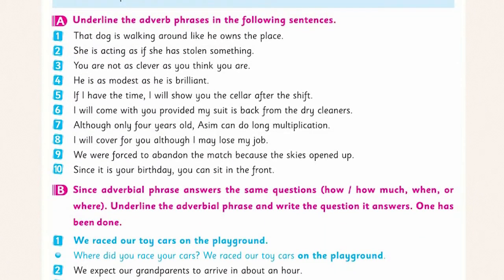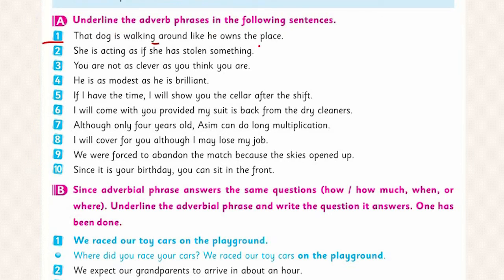Section A: Underline the adverbial phrase in the following sentences. Sentence 1: 'The dog is walking around like he owns the place.' The adverbial phrase is 'like he owns the place' — it is an adverbial phrase of reason, telling us why the dog is walking around like that.